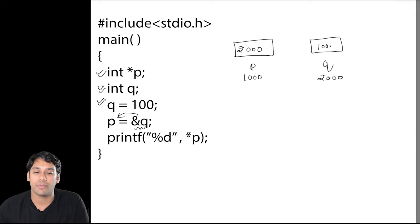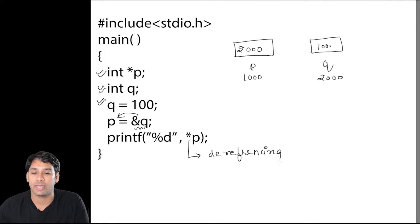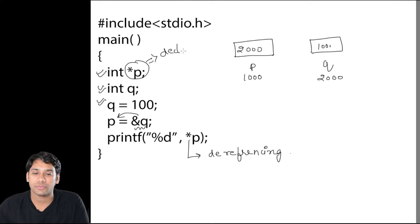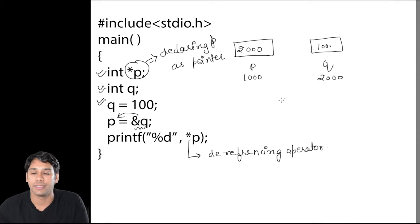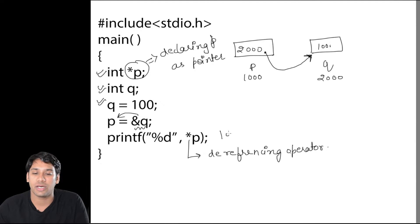In the next line, we do printf("%d", *p). Here the star is acting as a dereferencing operator. When declaring int *p, the star declares p as a pointer. But in the printf statement, the star acts as a dereferencing operator — meaning p is pointing to location 2000, so we go to that location and find the value stored there, which is 100. Therefore, this will print 100.